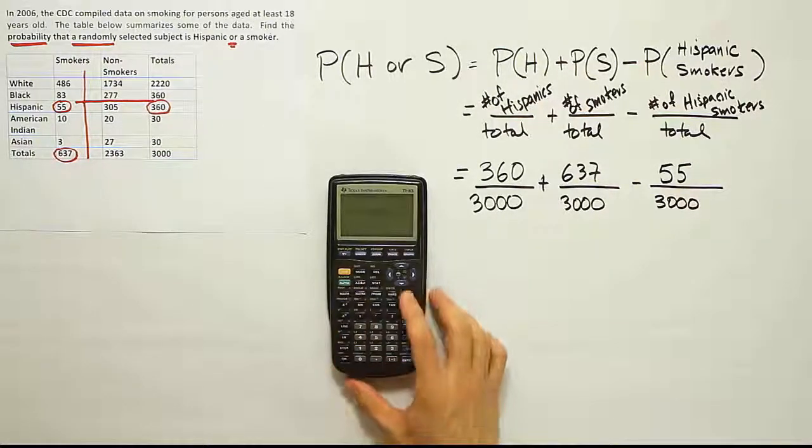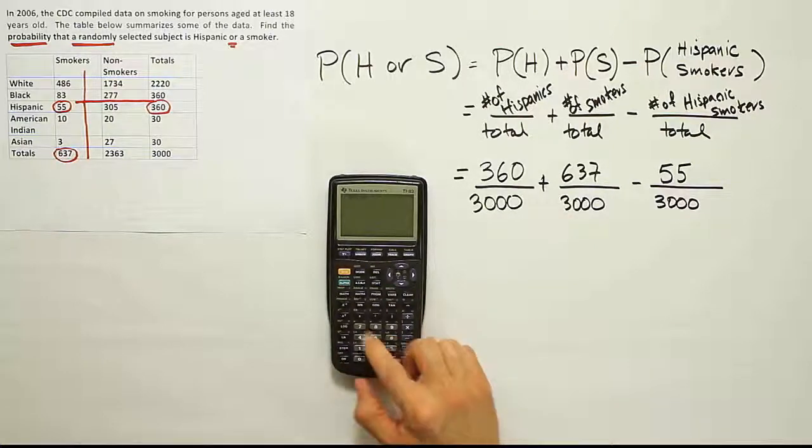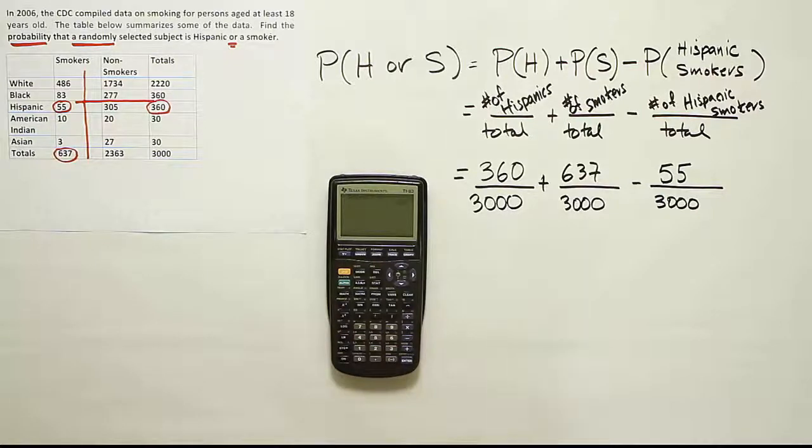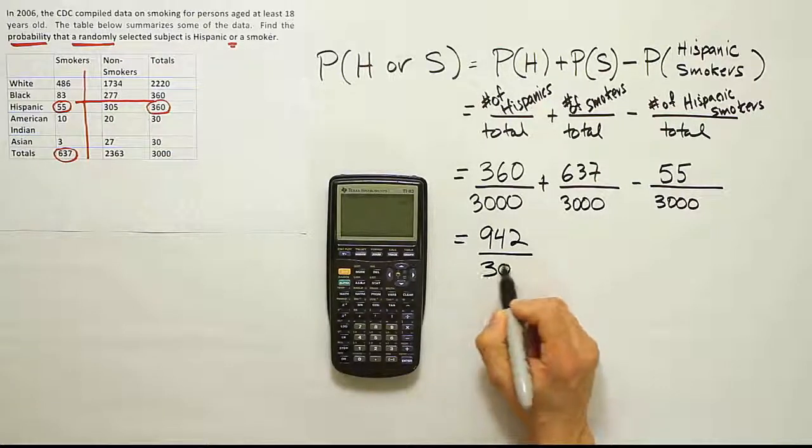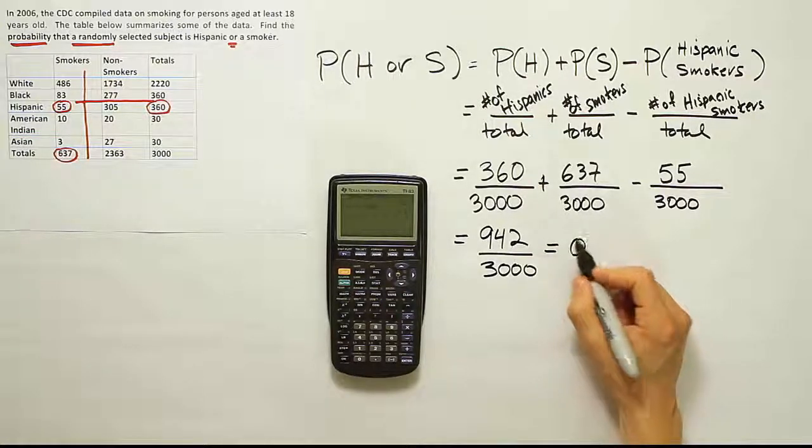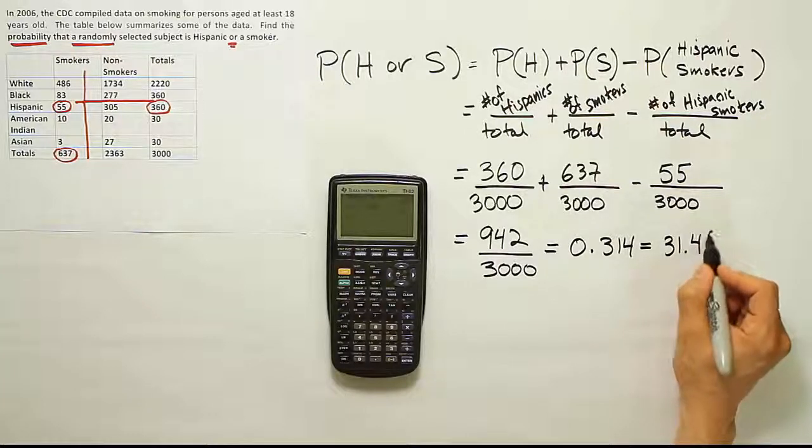And then just type in the numbers. So 360 plus 637 minus 55. Putting all the numerators together, we end up with the result 942 over 3000. And then at that point, we simply divide to get our final answer. And our decimal result then is 0.314 exactly, so that's 31.4%.